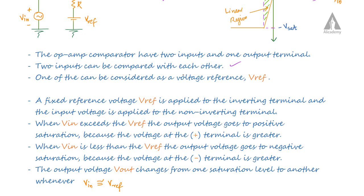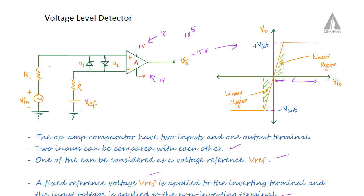The two inputs can be compared: one input is considered as the voltage reference. The fixed reference voltage Vref is applied at the inverting terminal and input voltage Vin is applied at the non-inverting terminal. The output voltage is given by A into (V1 minus V2), where V1 is the non-inverting terminal voltage.